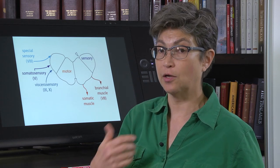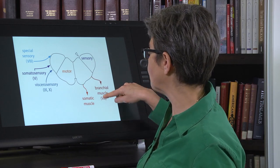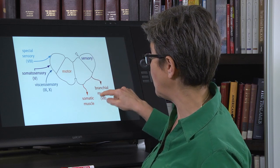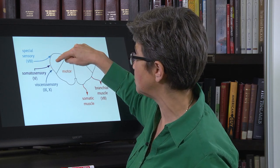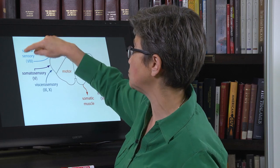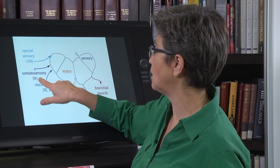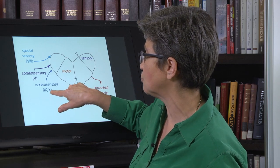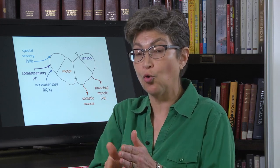The nerves that go out to somatic muscle are III, IV, VI, and XII: oculomotor, trochlear, abducens, and hypoglossal. The ones that go to branchial musculature include facial. Trigeminal carries somatosensory information, while glossopharyngeal and vagus carry viscerosensory information, and vestibulocochlear carries special sensory input most laterally. Note that the vagus nerve actually has five components.